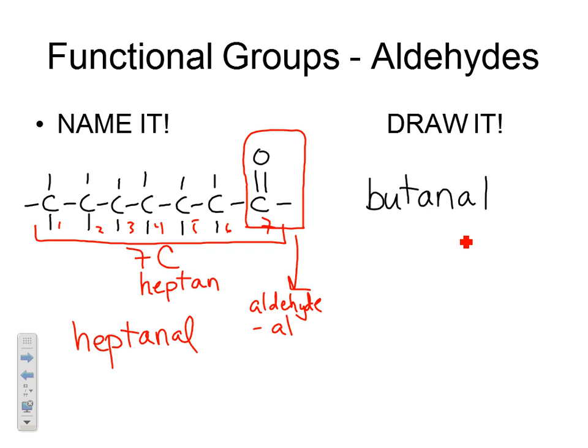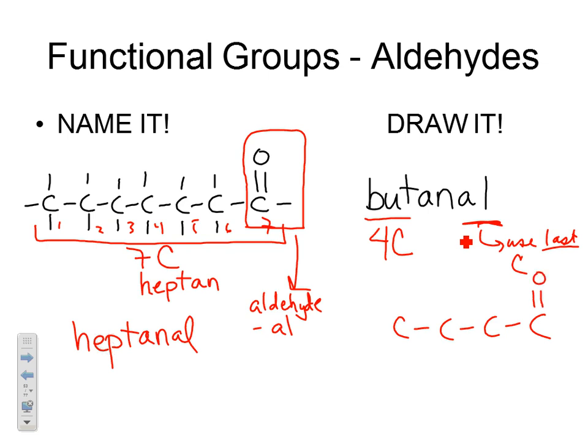In your reference table the example uses three carbons — prop- — giving propanal. To draw an aldehyde like butanal: but- means four carbons, so draw four carbons. The -al ending indicates the aldehyde — a C=O next to an H — so use your last carbon to make the C=O next to an H. Then give all other carbons four bonds. Make sure you only have four carbons total; the functional group carbon counts toward that total.